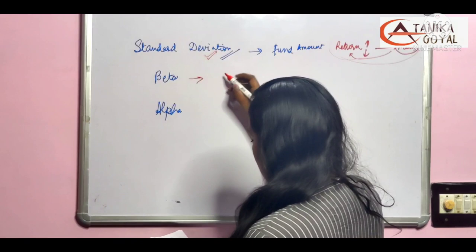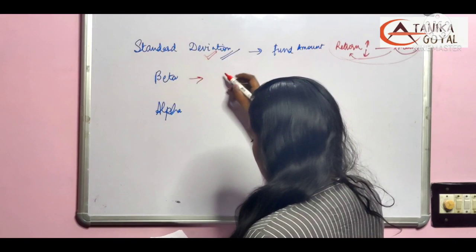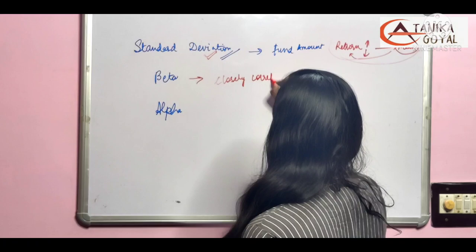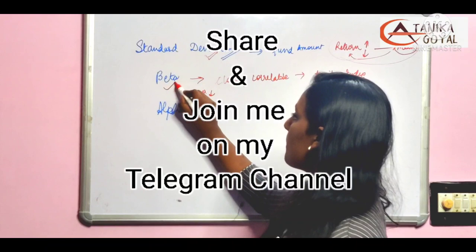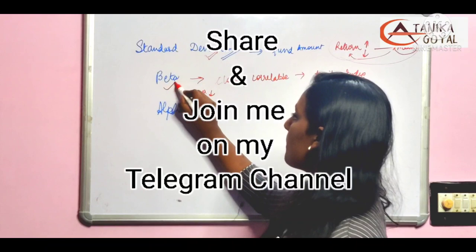After that, we have beta. Beta is closely correlated to its index, mostly our index is market, which is the value of the market. It tells us how much up or down.